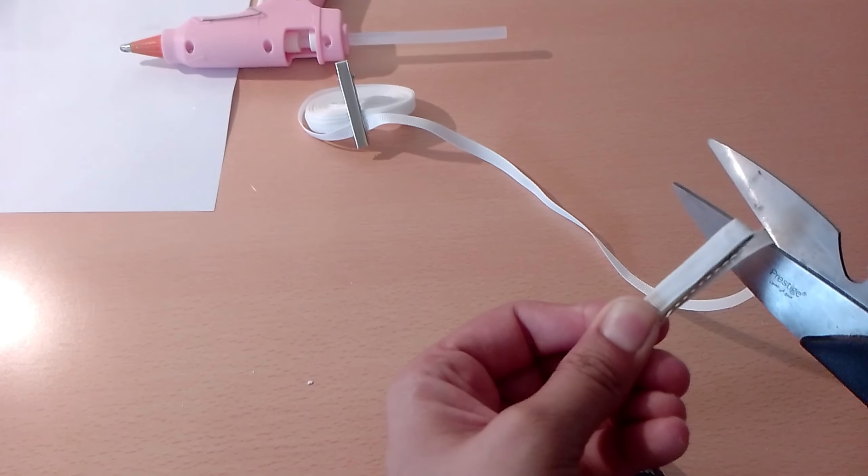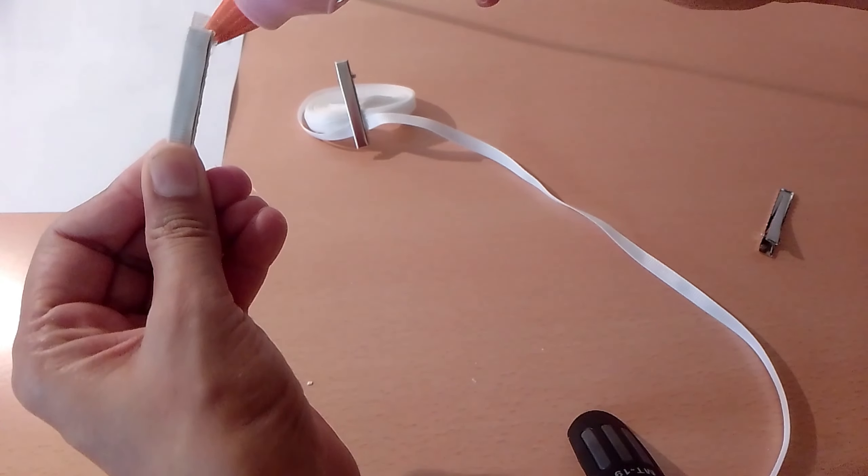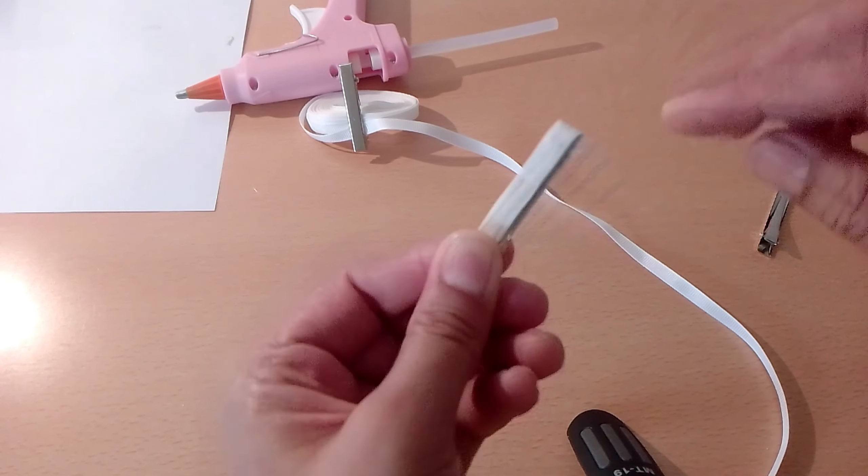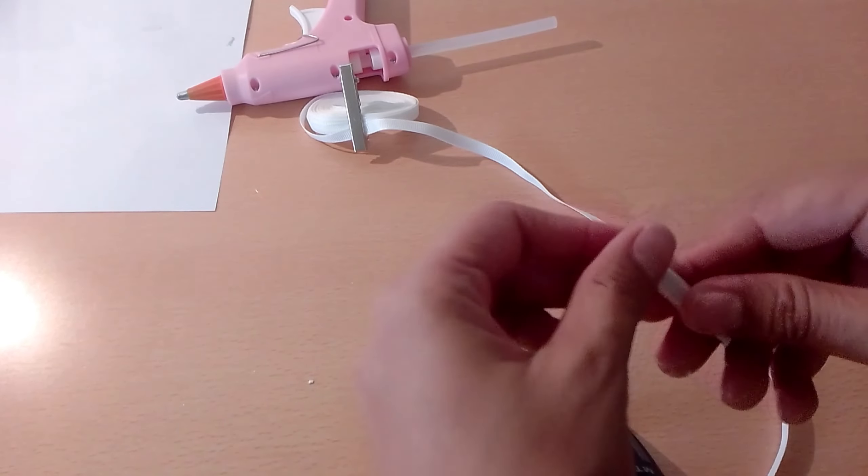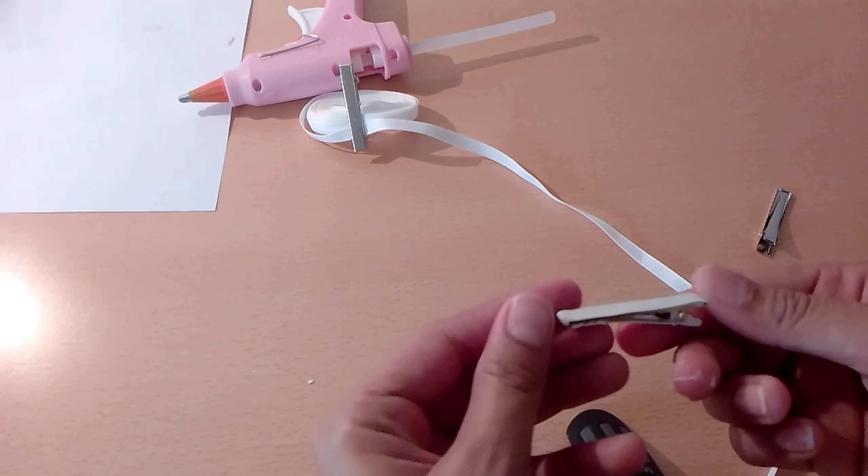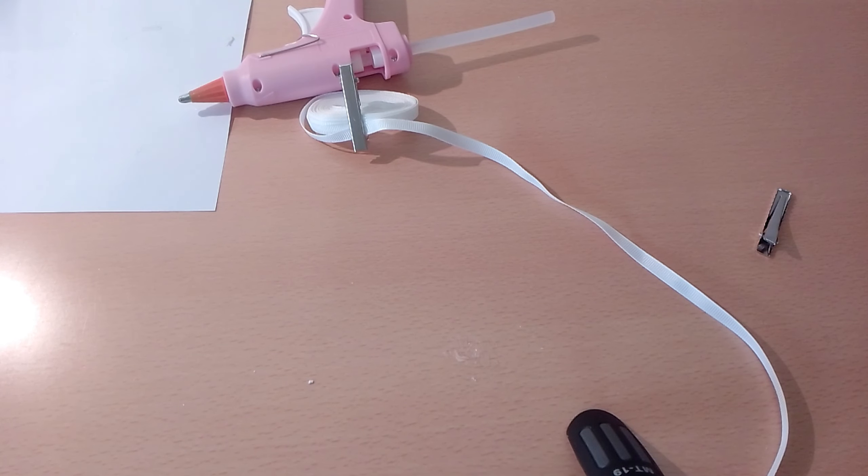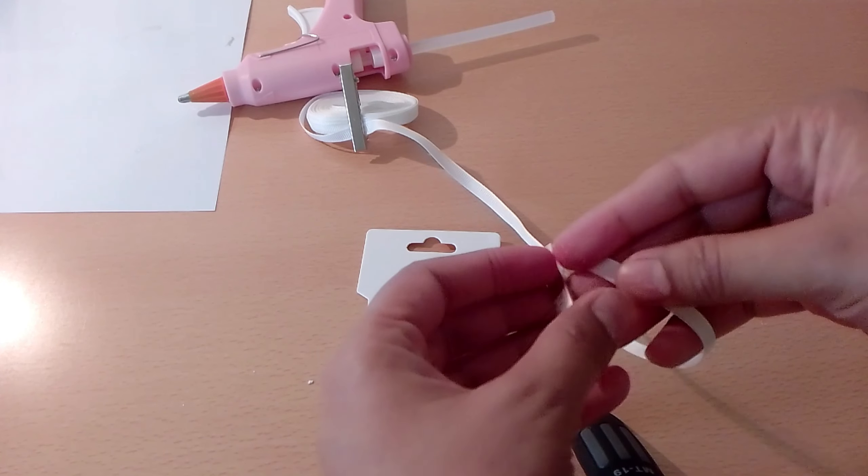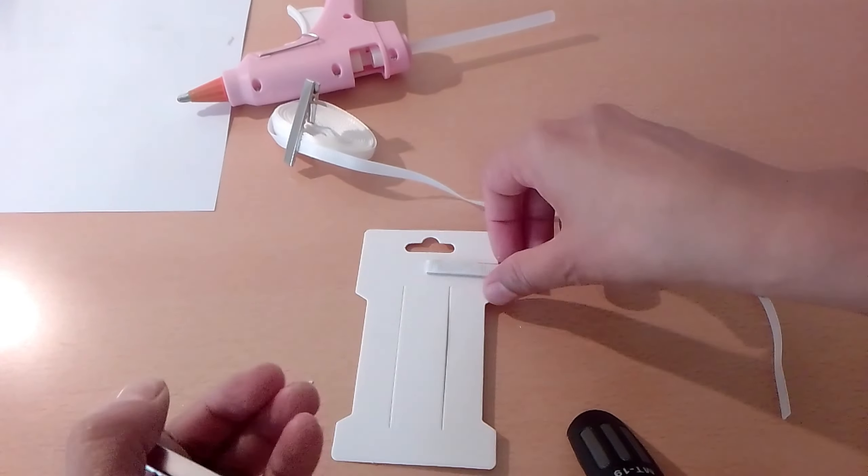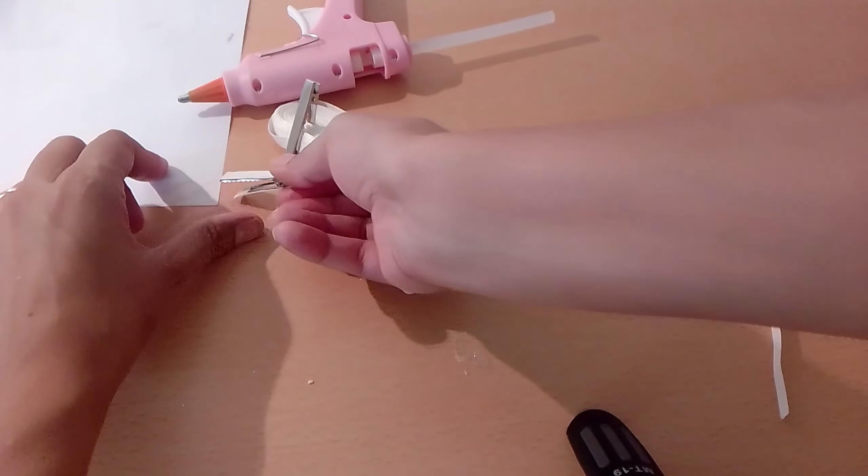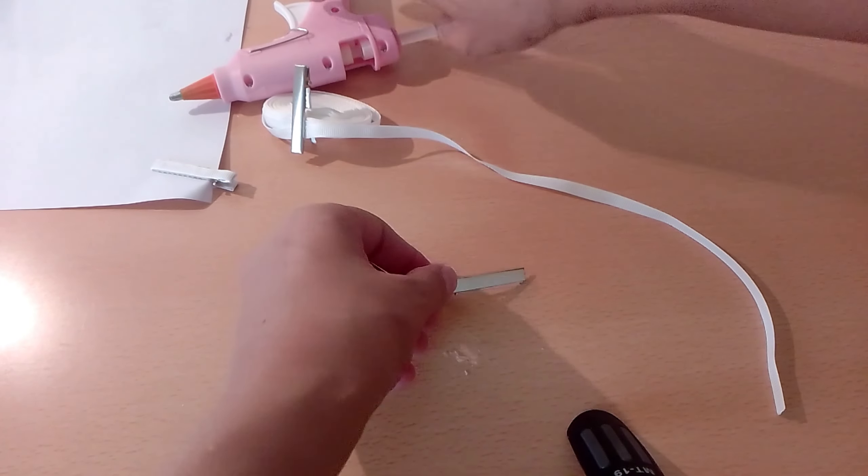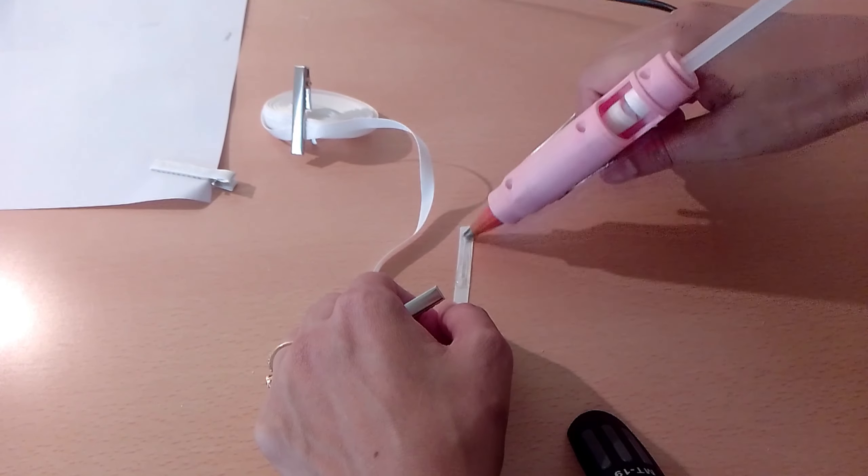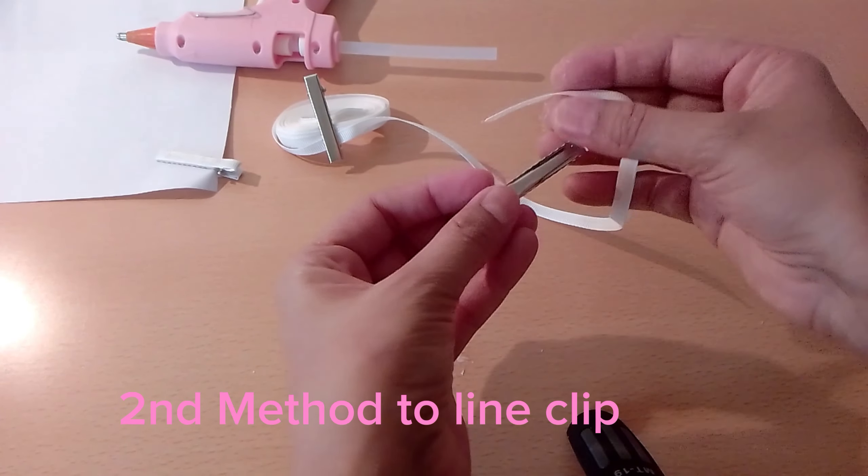But in the second one we will do it differently. Now open the clip and put it on some paper like this, so both of the jaws of the clip do not stick together because of the glue. And then now we will line the clip with the second method.